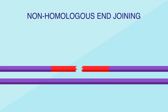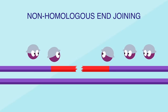But DNA can get damaged after replication, too. Lots of different molecules can cause chemical changes to nucleotides. Some of these come from environmental exposure, like certain compounds in tobacco smoke. But others are molecules that are found in cells naturally, like hydrogen peroxide.